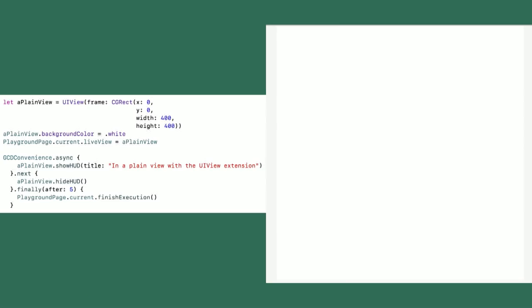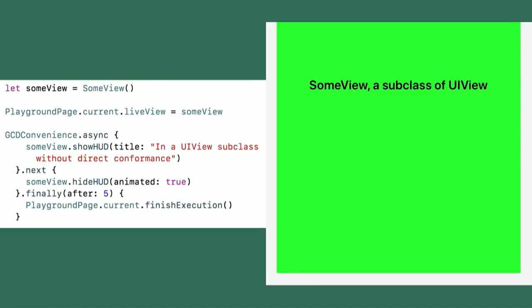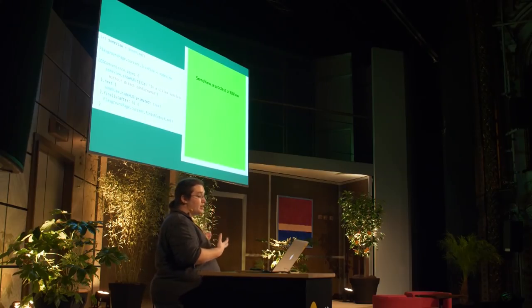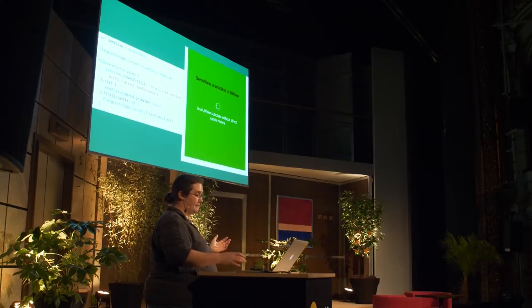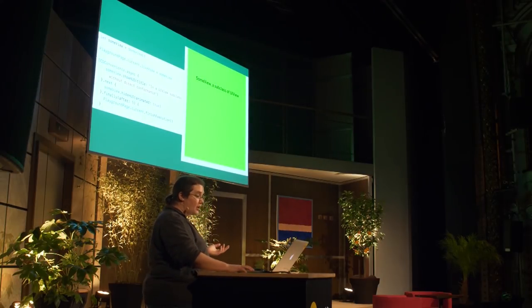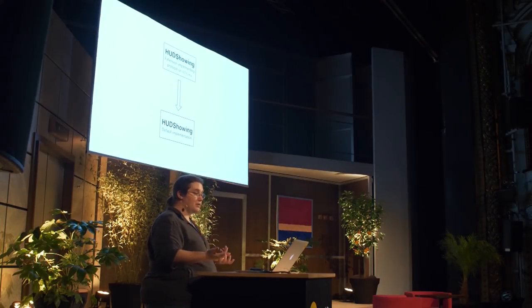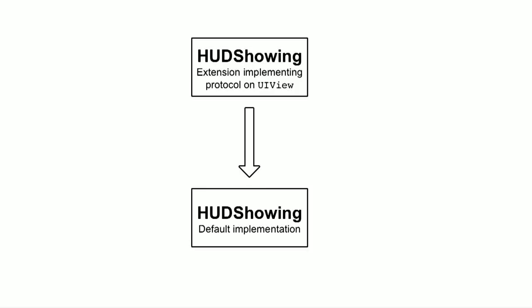The difference is that here, because it conforms to the protocol, the extension is able to take advantage of the default implementation of that protocol. The actual code showing and hiding the view is still centralized in HUDShowing's default implementation. So now I can just instantiate any plain vanilla UIView and it would have the ability to show and hide the HUD. Even if I had a subclass that did some additional setup, it still got this HUD showing behavior absolutely for free.